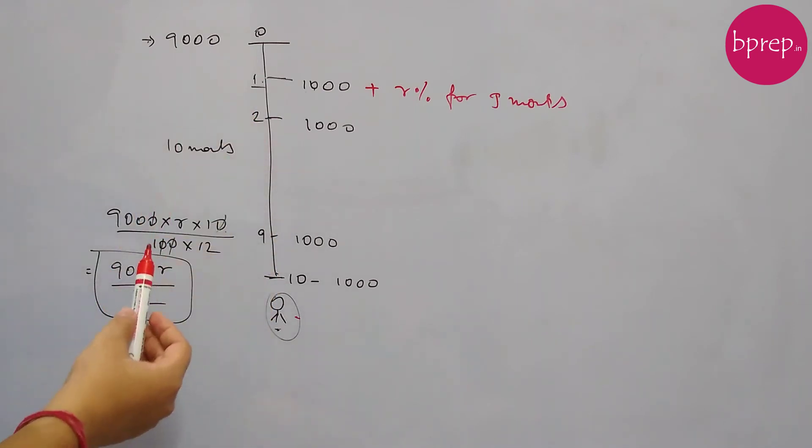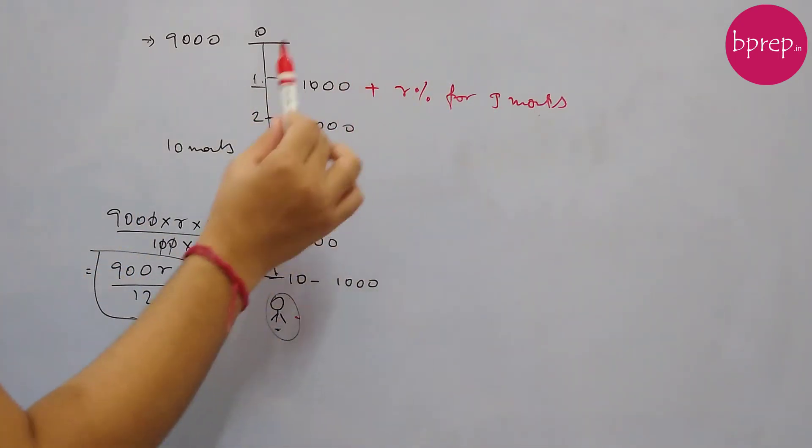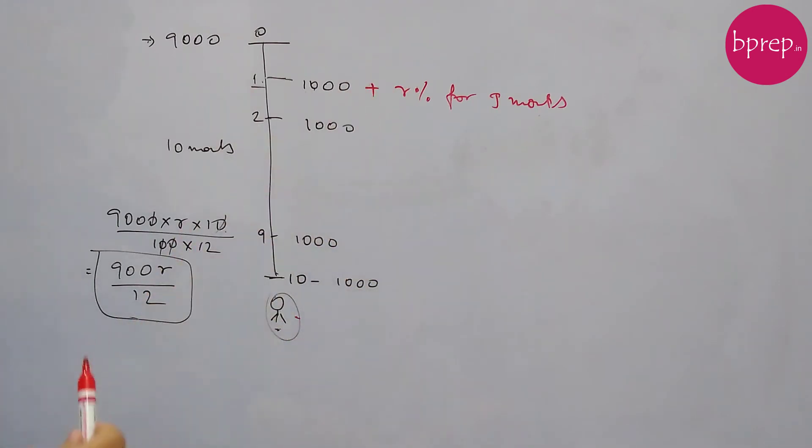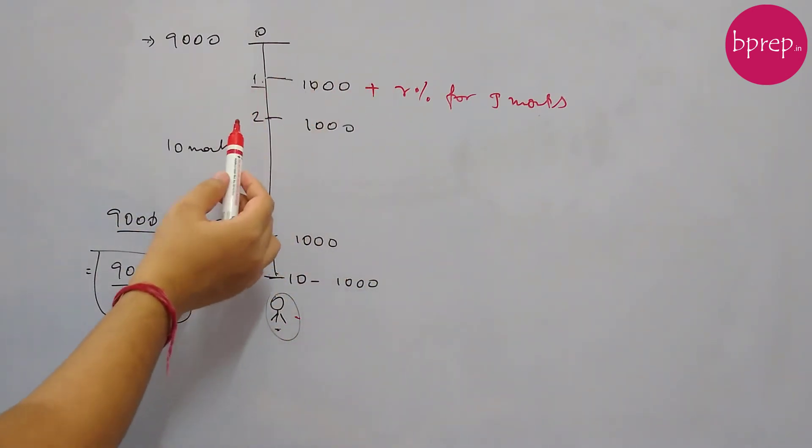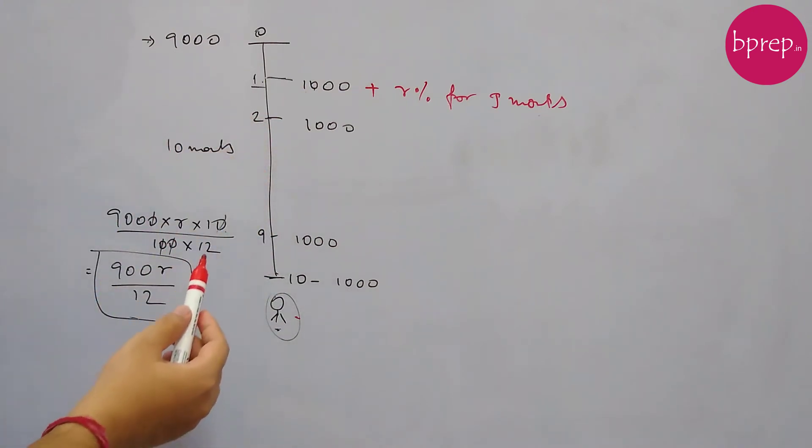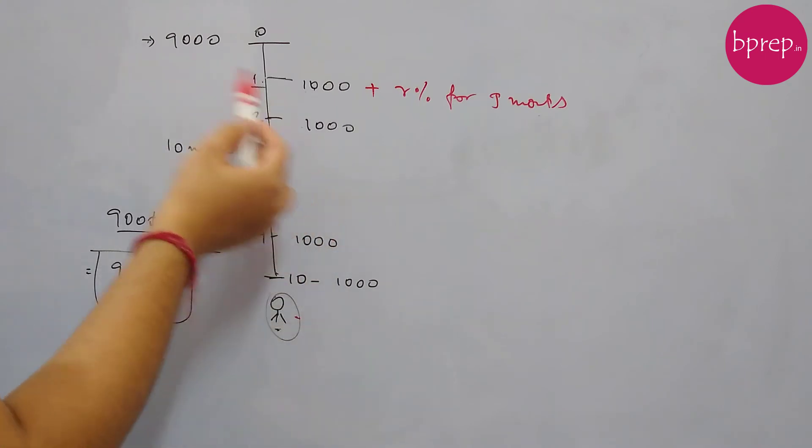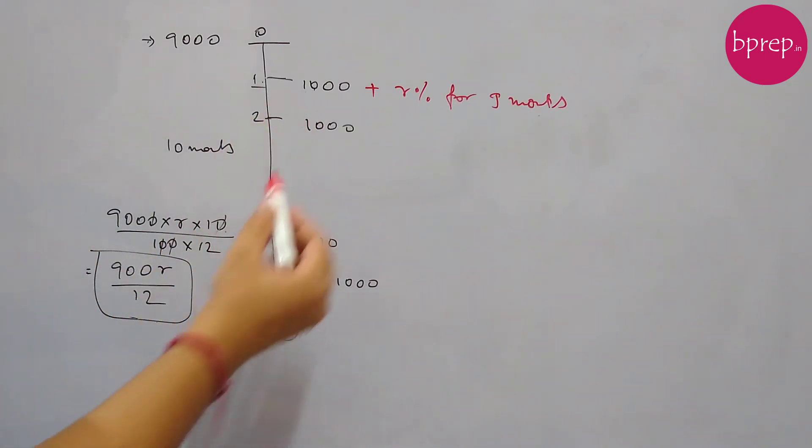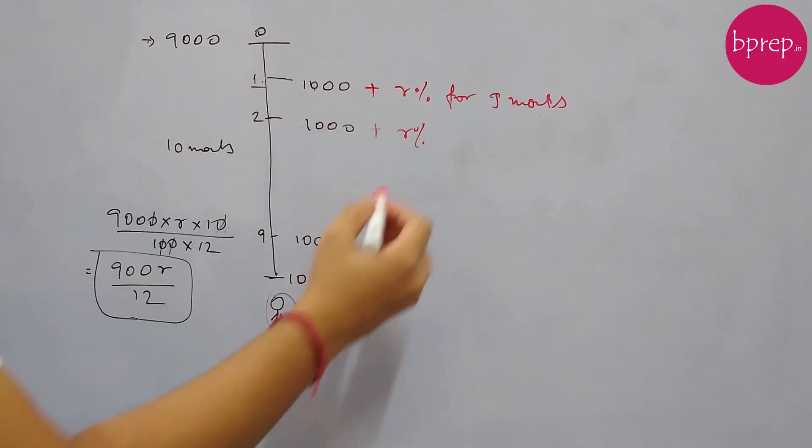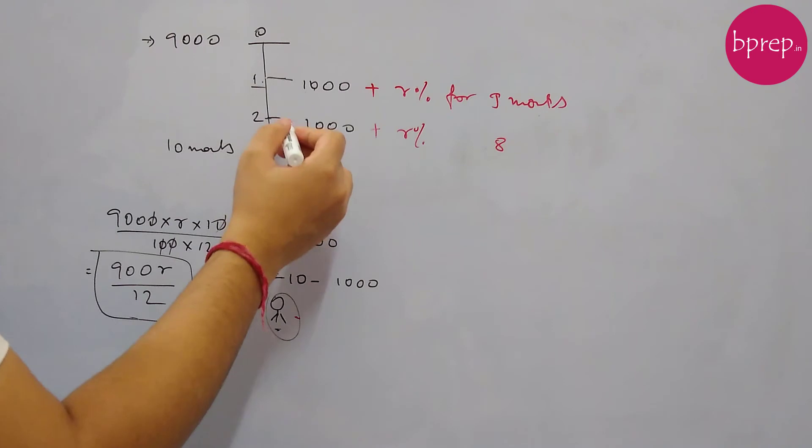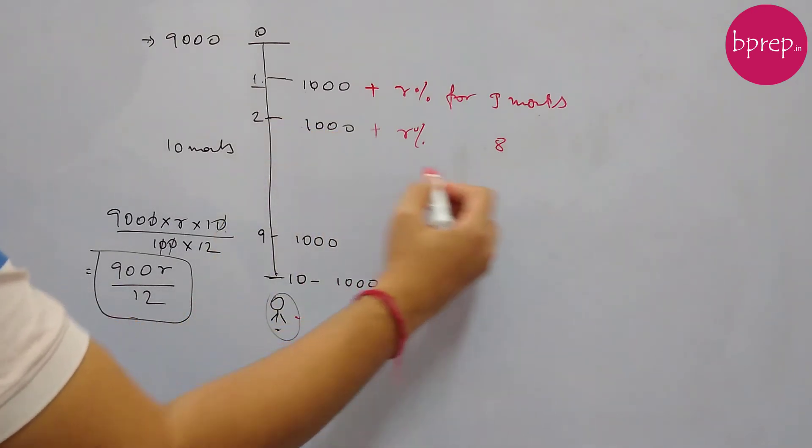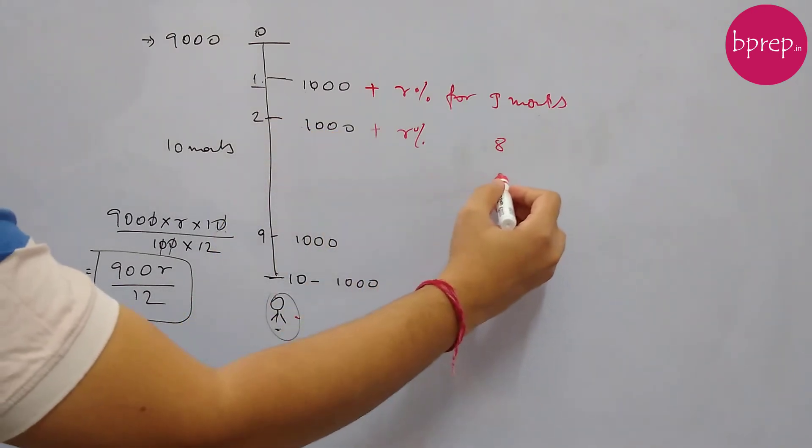So we can say R% for 9 months. This is the current value of this 1000. I am repeating this every time because this is a key thing to understand this problem. Similarly the second installment - if you have not understood this for the first installment, you should take a pause and then again revise this because this is important. For the second EMI, this amount of 1000 from this point was invested 8 months back.